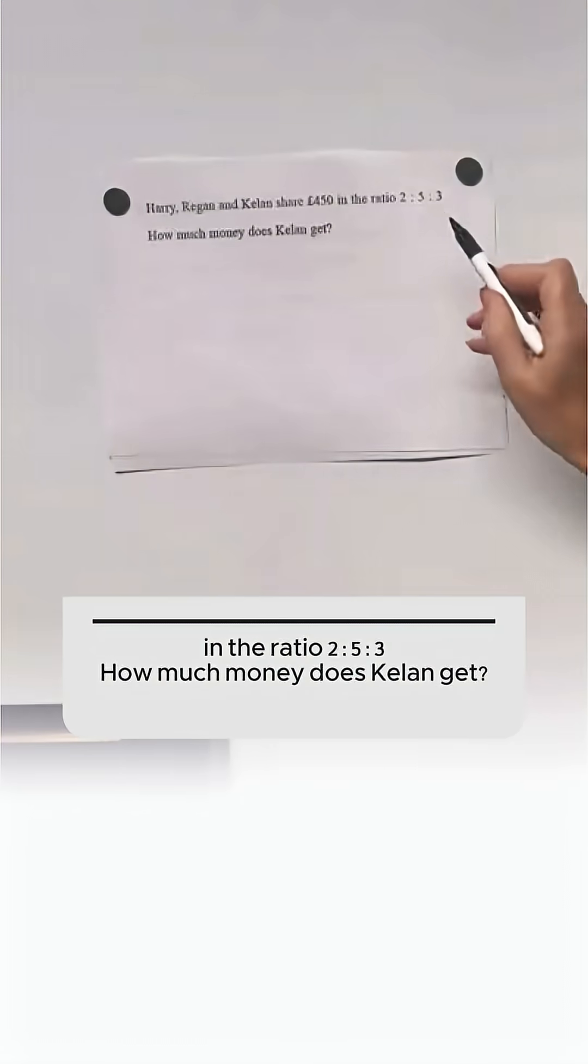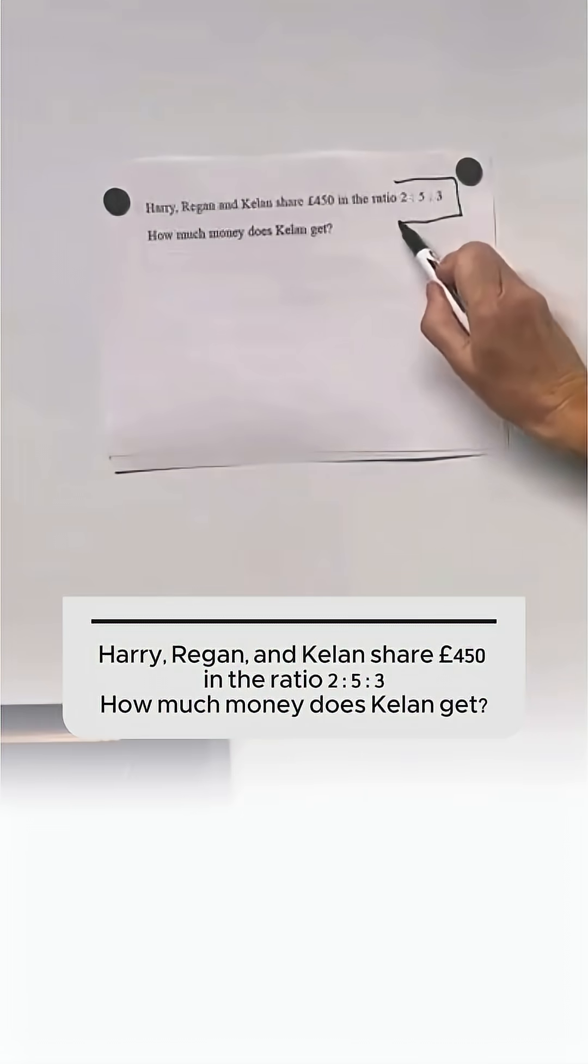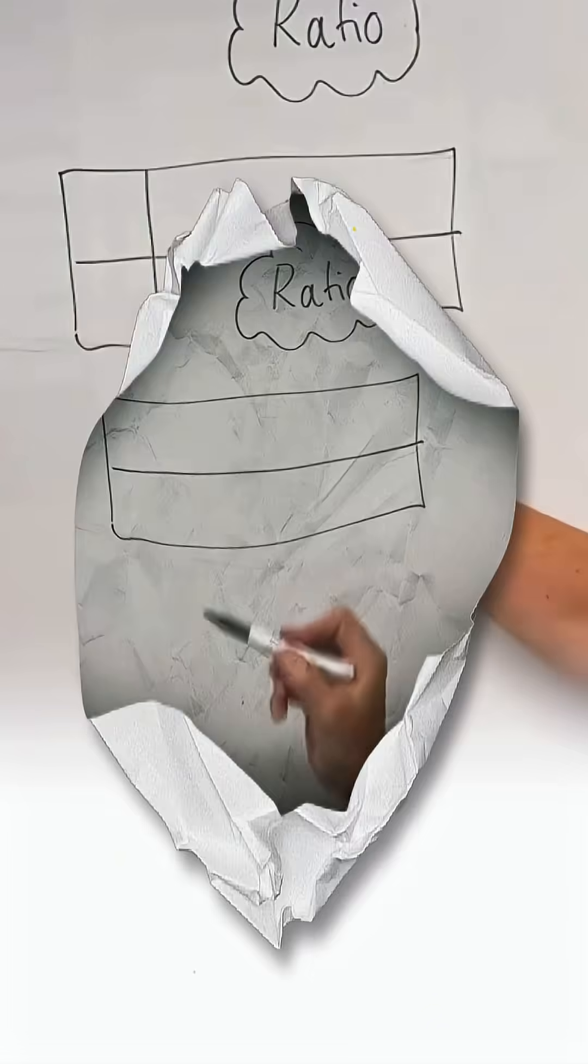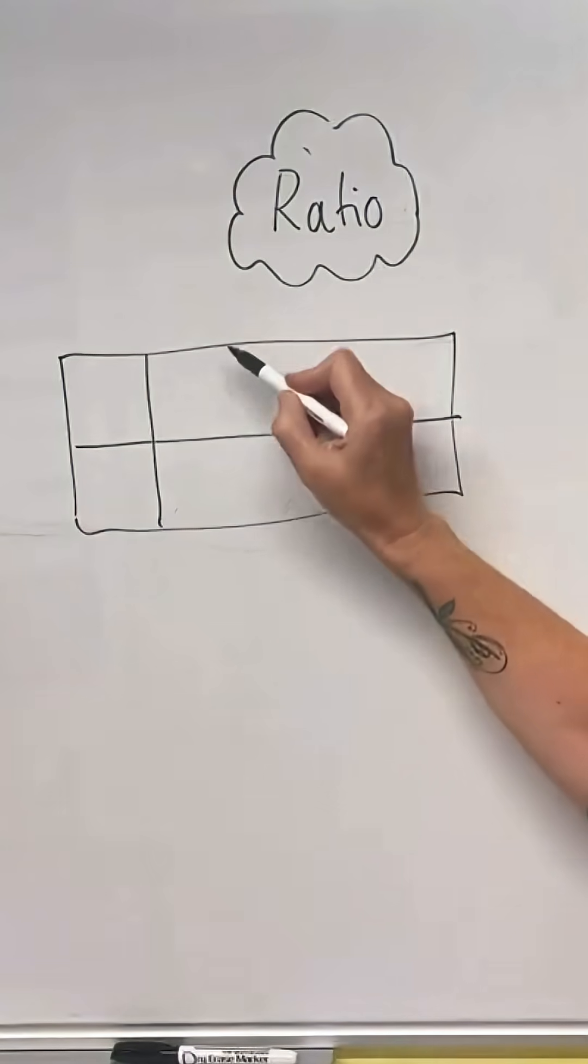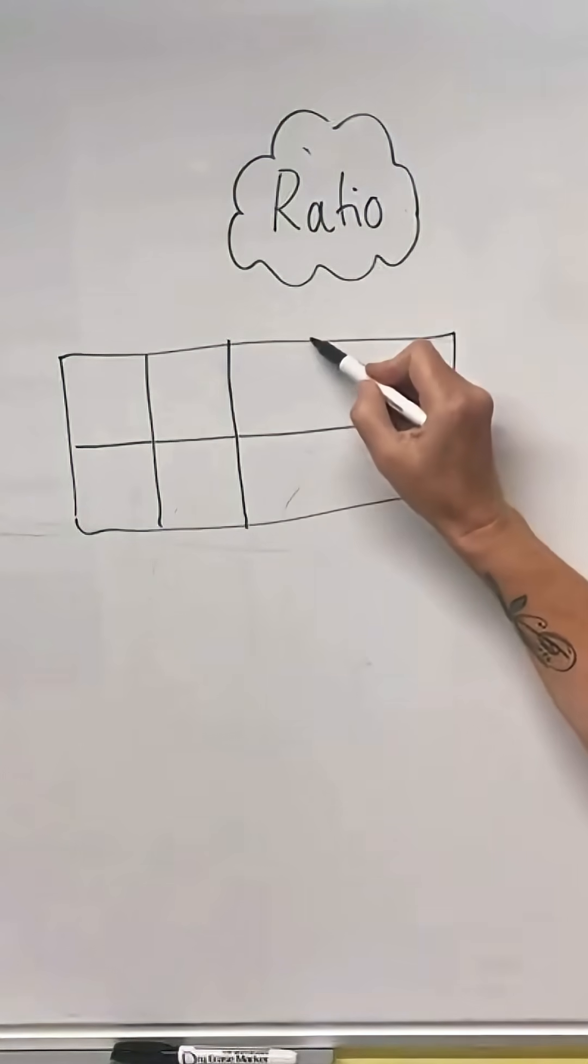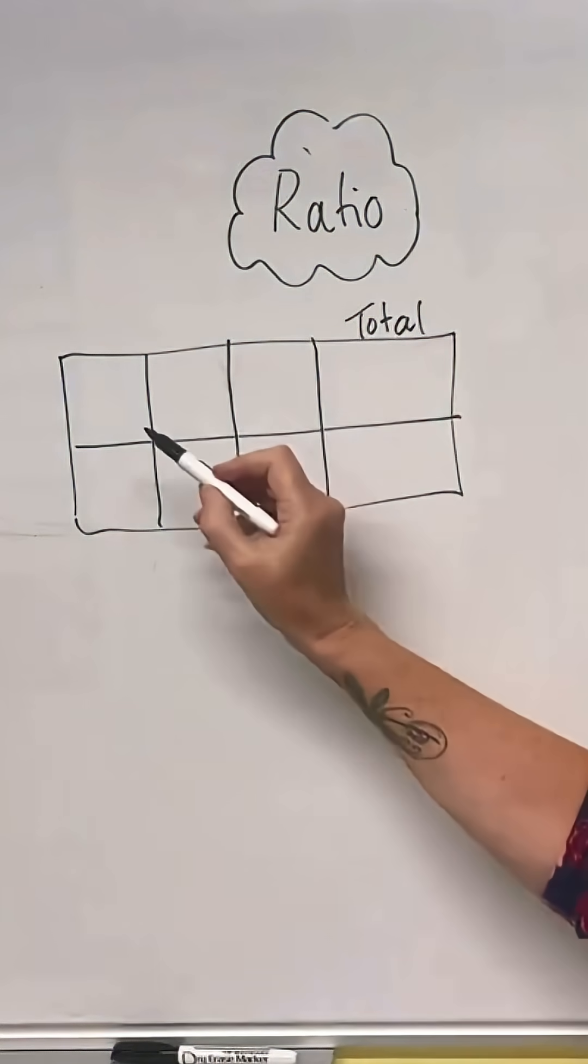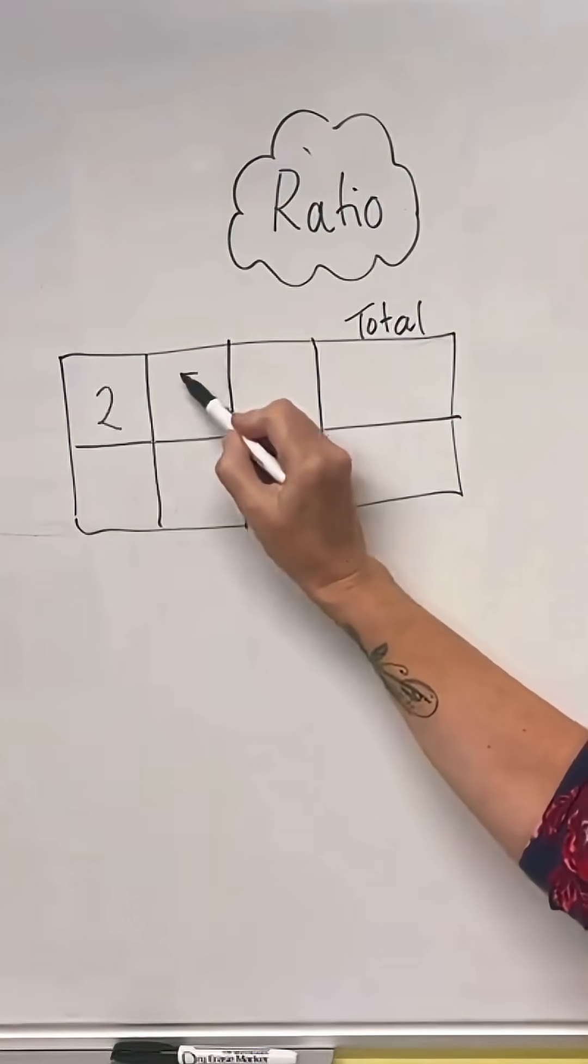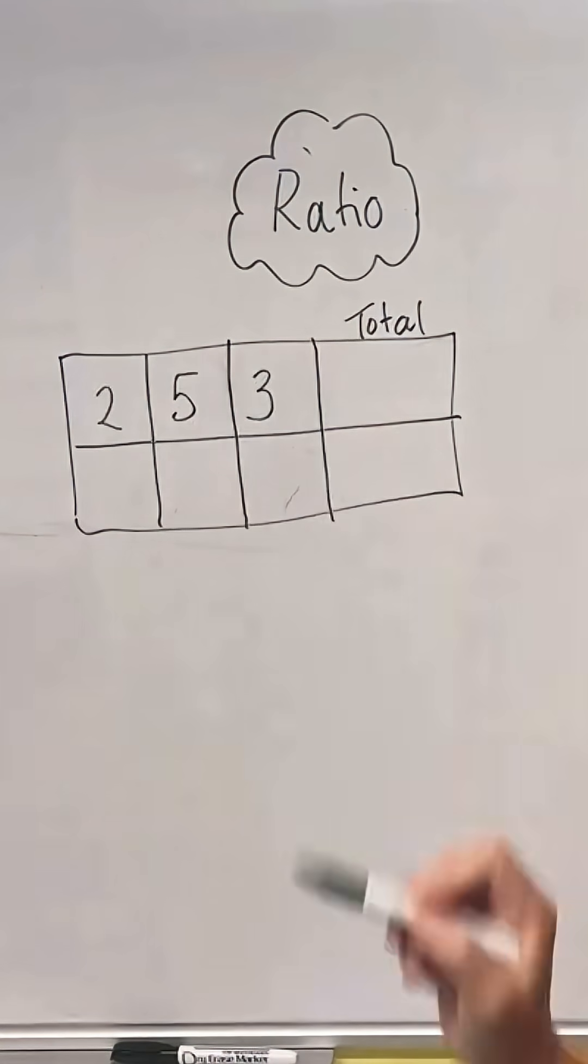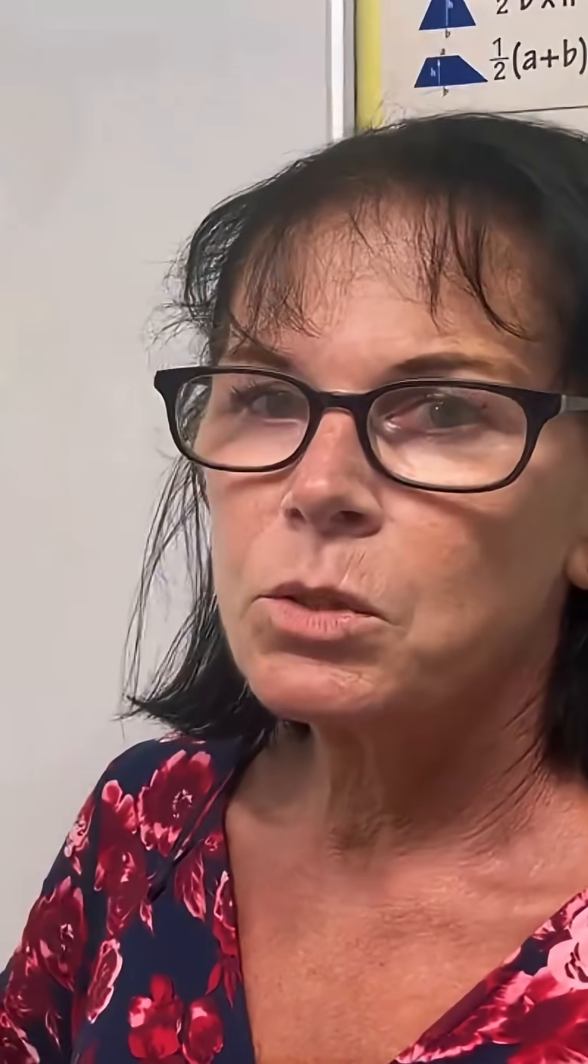And we look at the question. Now this question has three numbers in the ratio, so I'm going to have three columns, one for each of my ratios, and I'm going to have one left at the end for the total. So here is the ratio: 2, 5, and 3.